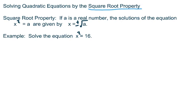So solutions of an equation of this form, and it must be of this form, x squared equals a, where a is a number, are given by x equals plus or minus the principal square root of that number a.